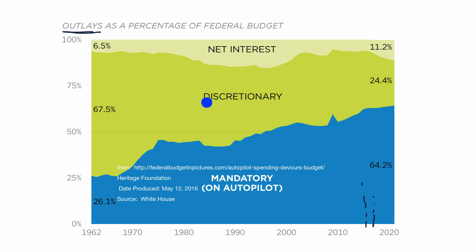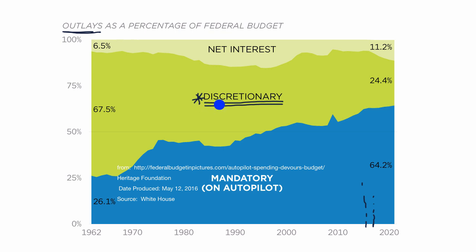The discretionary outlays are things that the appropriations committees in the Senate or the House debate where to spend the money. Even though it might sound like something that's just nice to have, there are pretty important things in the discretionary budget — things like military expenditure. The discretionary budget has gone from over two-thirds of federal outlays to a little under one-fourth projected in 2020.